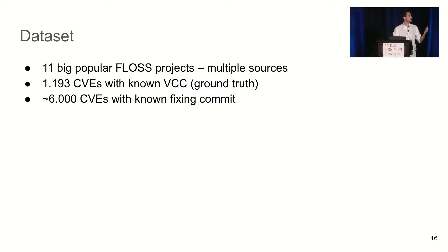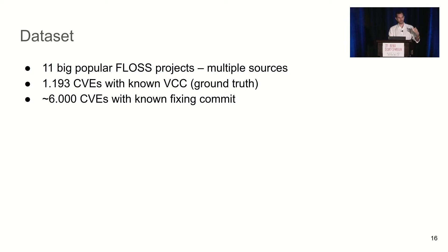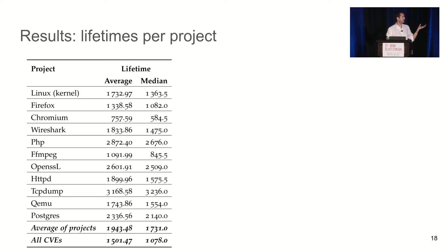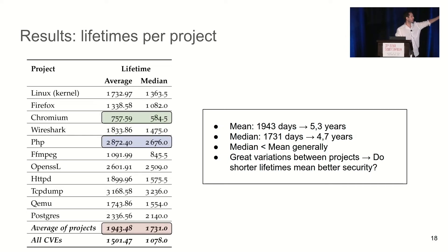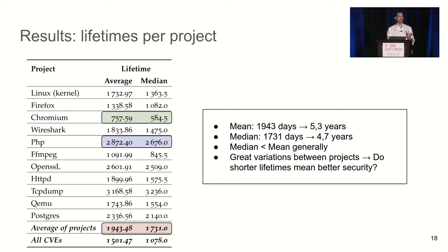We proceed with a dataset of 11 popular free software projects, using multiple sources for vulnerability contributing commits and a limited set of ground truth CVEs plus many more with heuristic-estimated commits. Here we have the computed average and median lifetimes for all 11 projects. Vulnerabilities generally live in the code for many years, and there are great variations between projects — for example, Chromium and PHP show very different lifetimes. This does not simply mean one project's security is much better than another's.